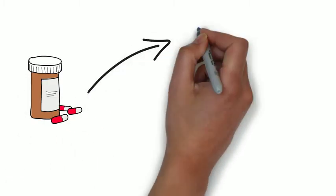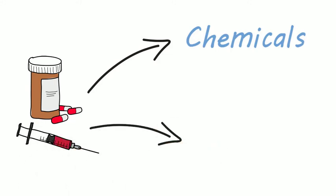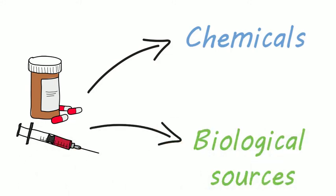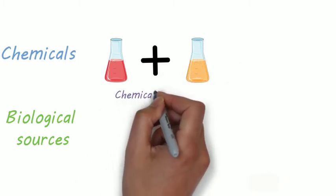The medicines we take can be made using chemicals or they can come from biological sources such as living cells. The active ingredient in a chemical medicine is made by a series of chemical reactions.